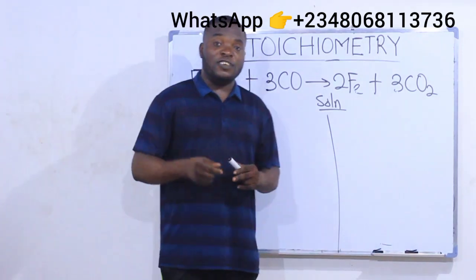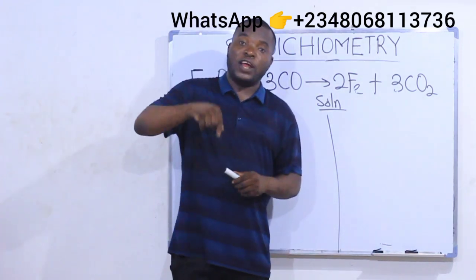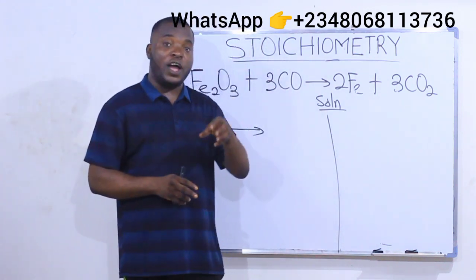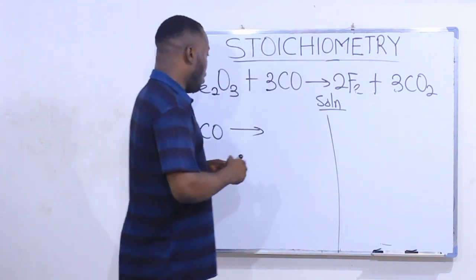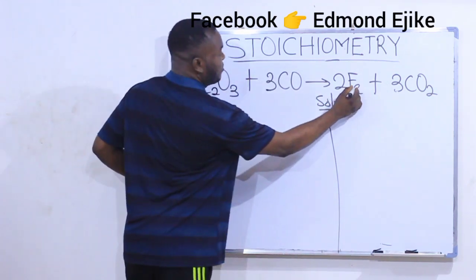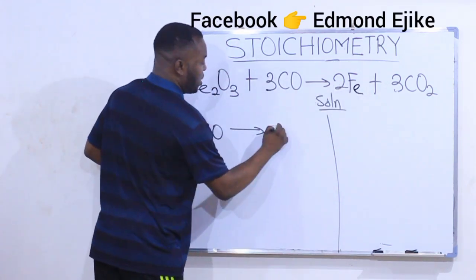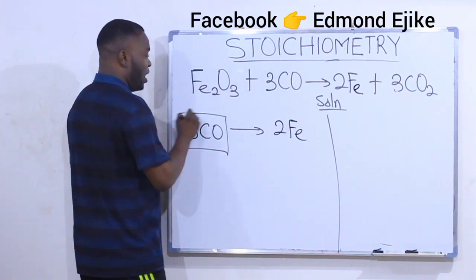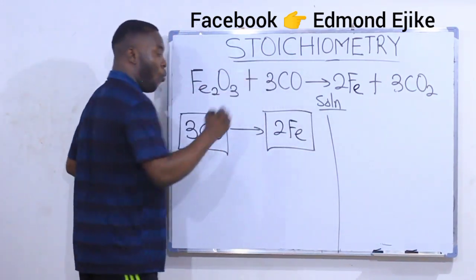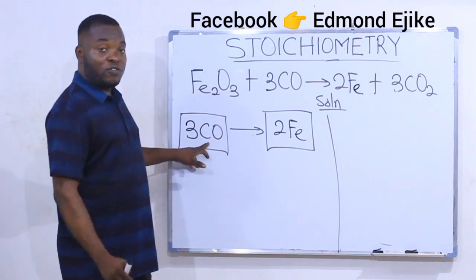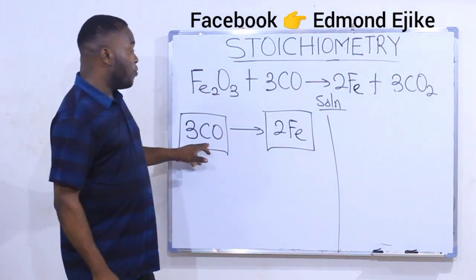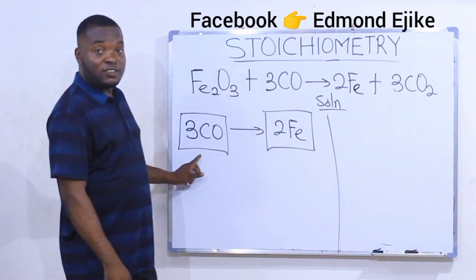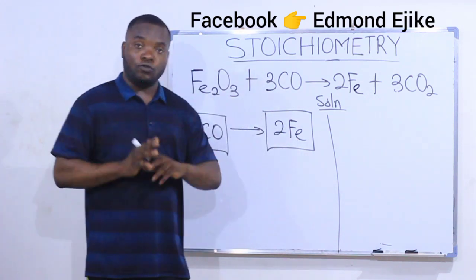The next substance to bring out is the one whose value is given to you in the question. From the question, they gave us 35 moles of iron, so I'll bring out iron — bring it out with the number that balances the equation: 2Fe. Those are the two substances I'm going to use, because CO is what I'm calculating for and iron is the one whose value was given.